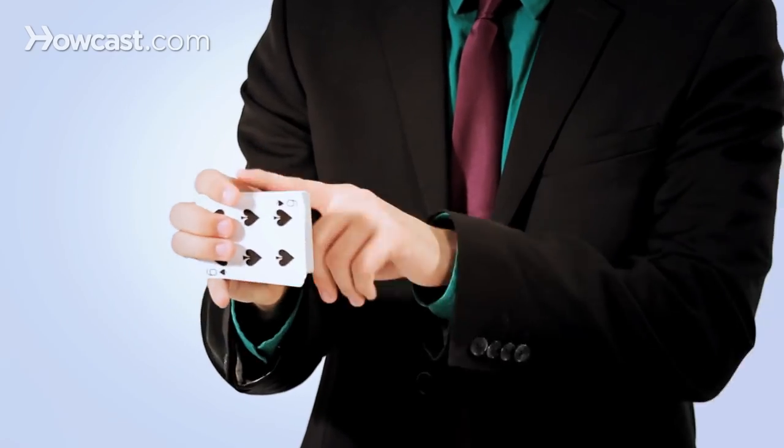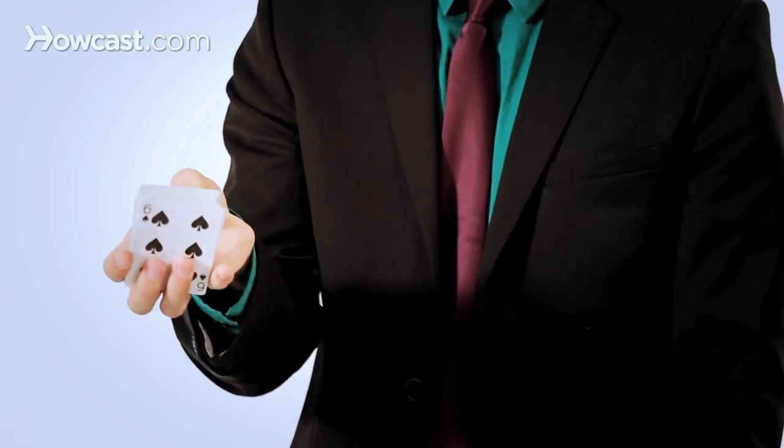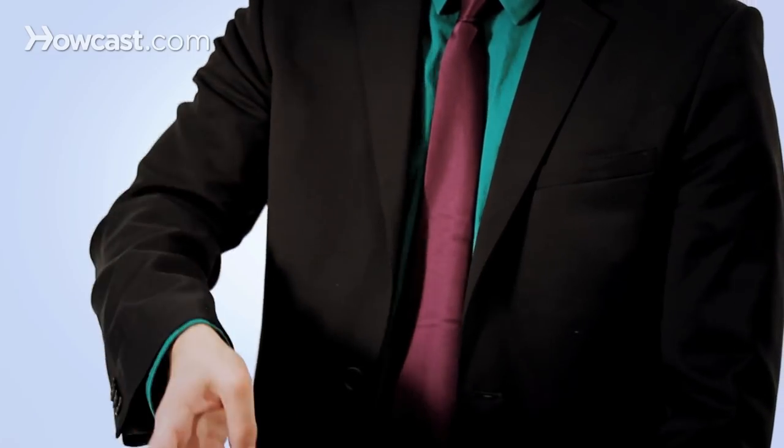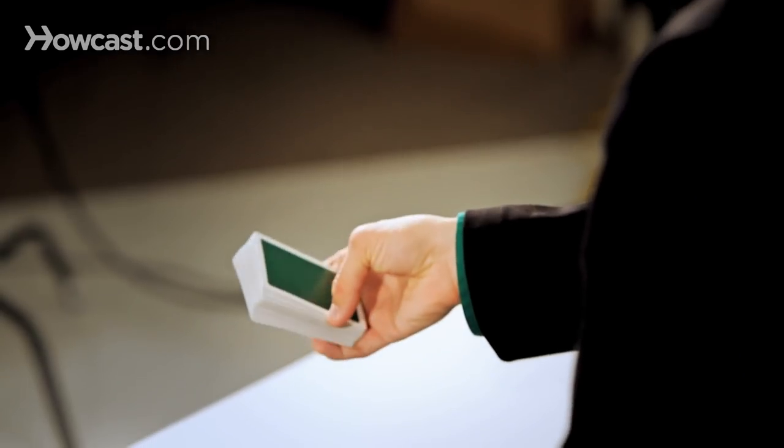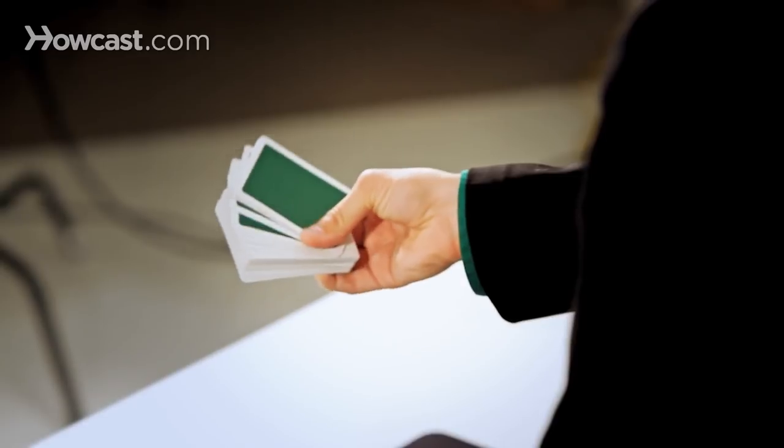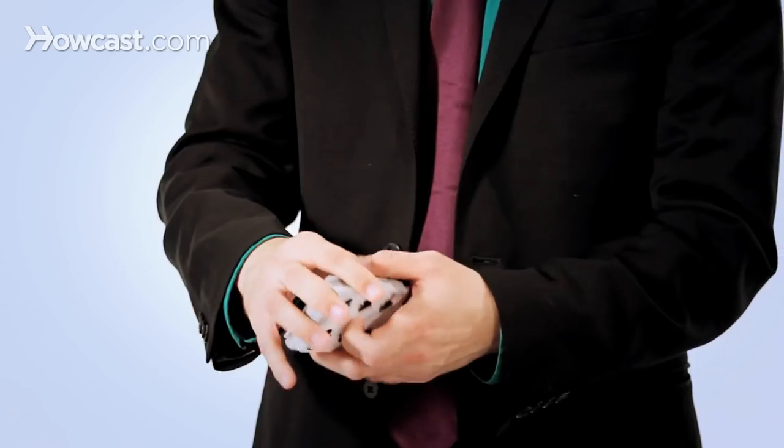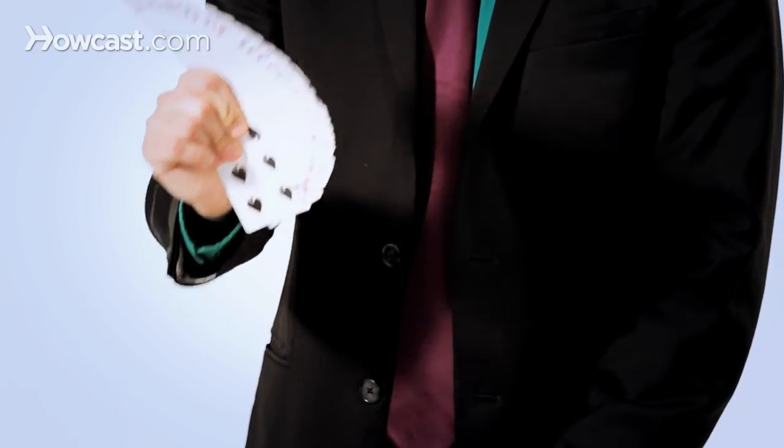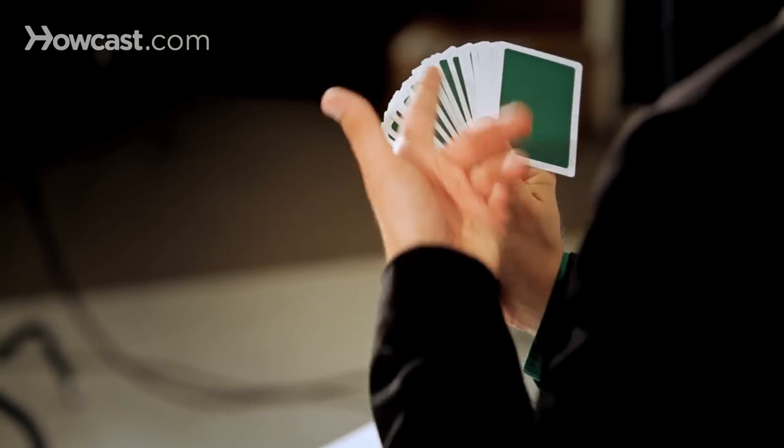You're not actually going to hold them entirely like this during the course of the fan. You're going to place your thumb on the bottom edge right around here, and you're going to sort of let go. When you do this, you're going to push with your thumb and pull with your other fingers. This is difficult to do with an entire deck and make it look even.